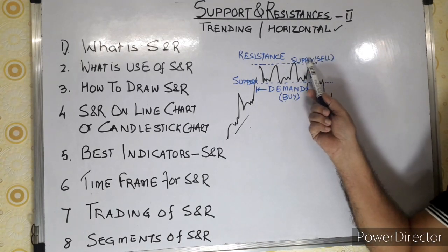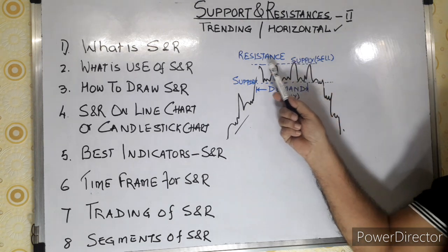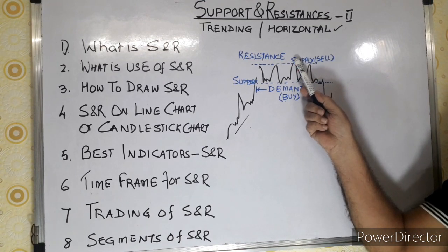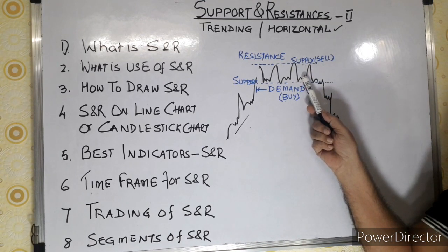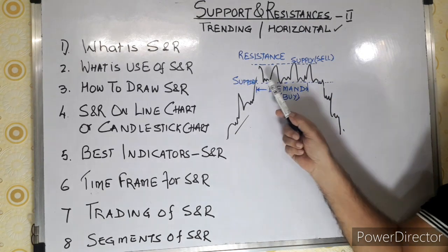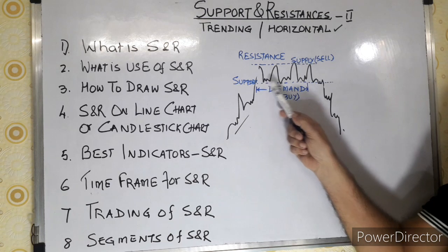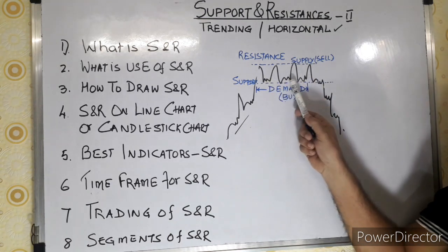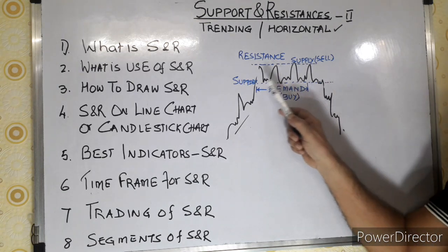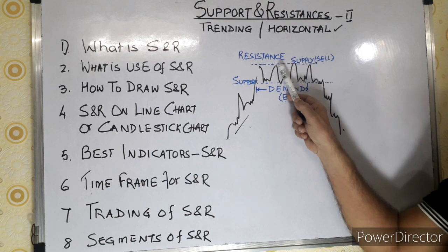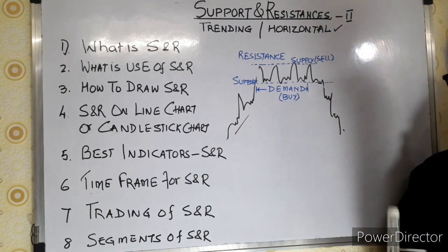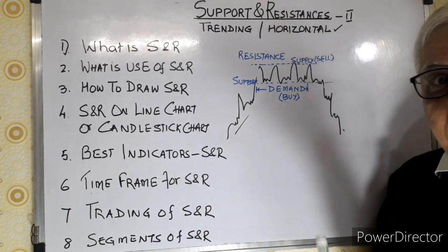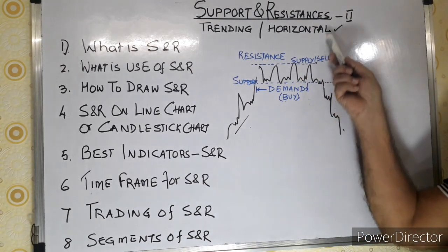If you see, supposing we are here, the predetermined prices are levels where prices have taken a pause and there was a reversal. Similarly, at these prices — one, two, three, four, five times — it has actually taken support before it broke down. So prices will either go up or come down at these levels.